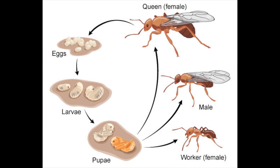Larva. The worm-like larvae have no eyes and no legs. They eat food regurgitated by adult ants. The larvae moult, shedding their skin many times as they increase in size.